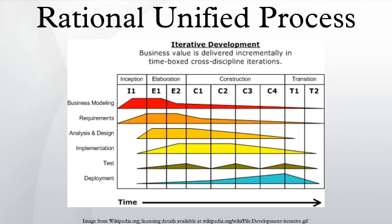After these are completed, the project is checked against the following criteria: stakeholder concurrence on scope definition and cost/schedule estimates; requirements understanding as evidenced by the fidelity of the primary use cases; credibility of cost/schedule estimates, priorities, risks, and development process; depth and breadth of any architectural prototype developed; and establishing a baseline to compare actual versus planned expenditures. If the project does not pass this lifecycle objective milestone, it can be cancelled or repeated after being redesigned.